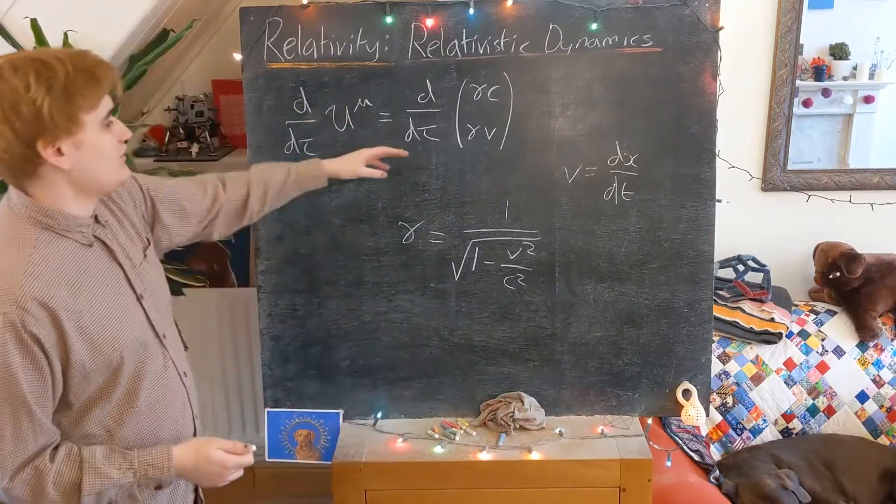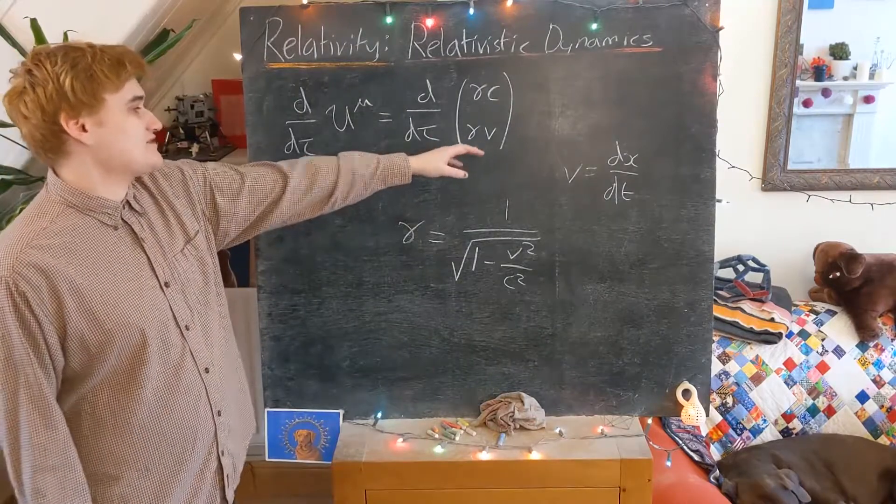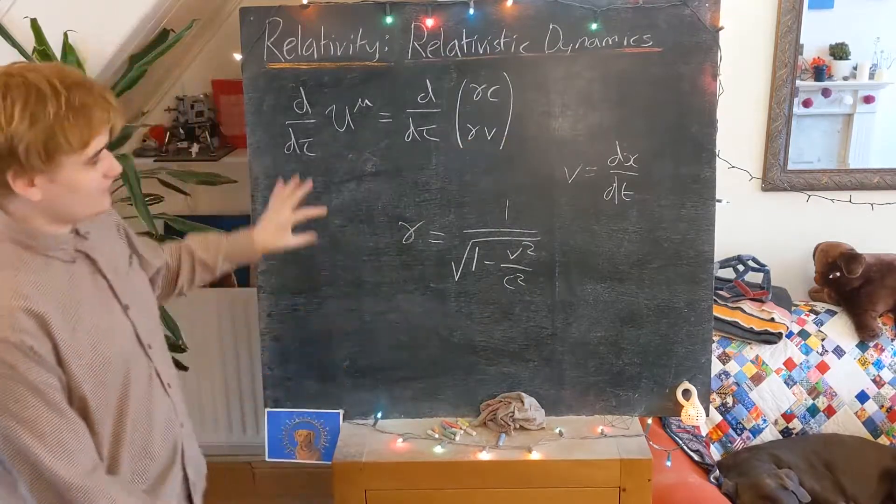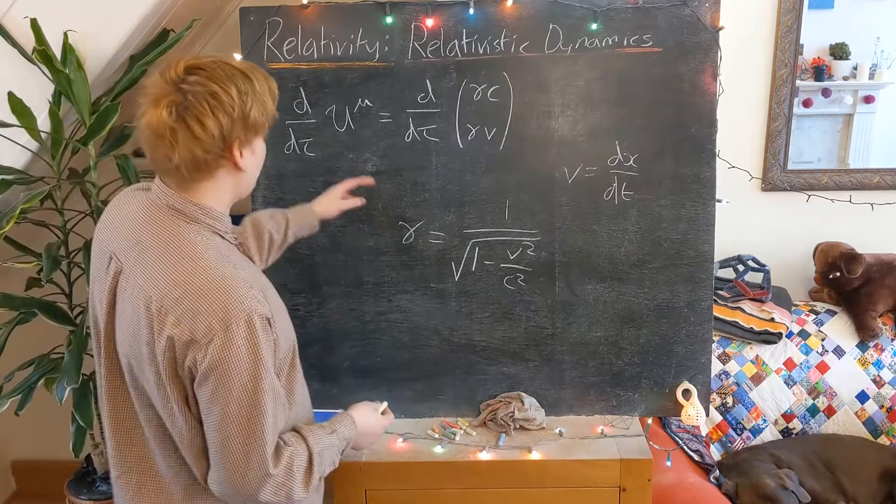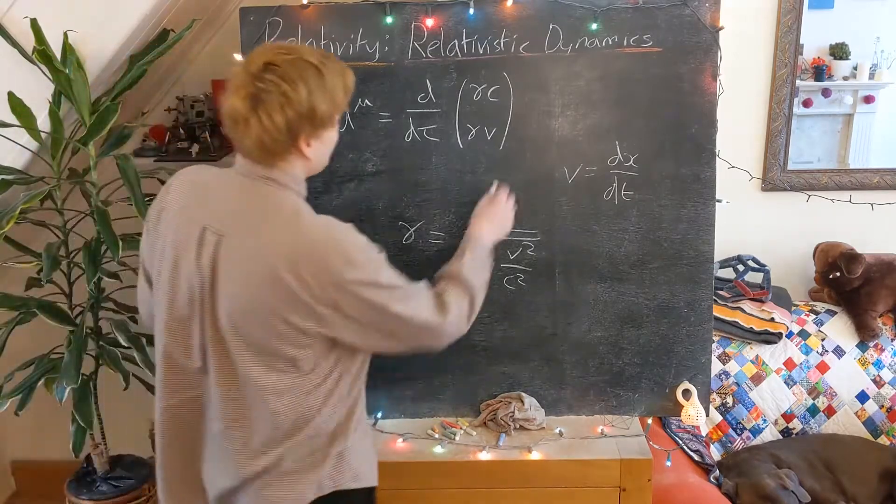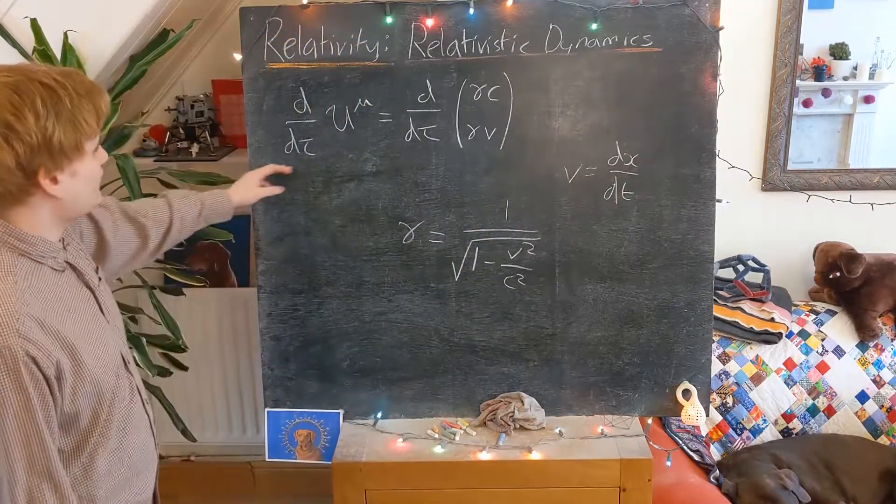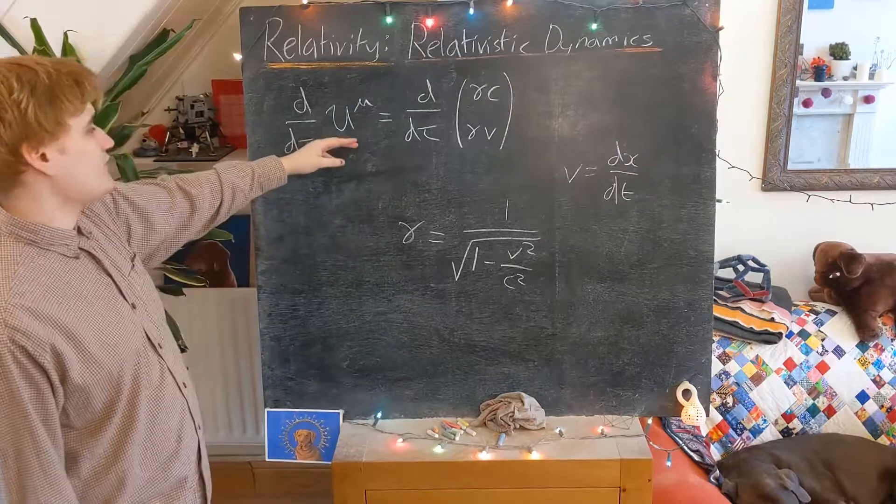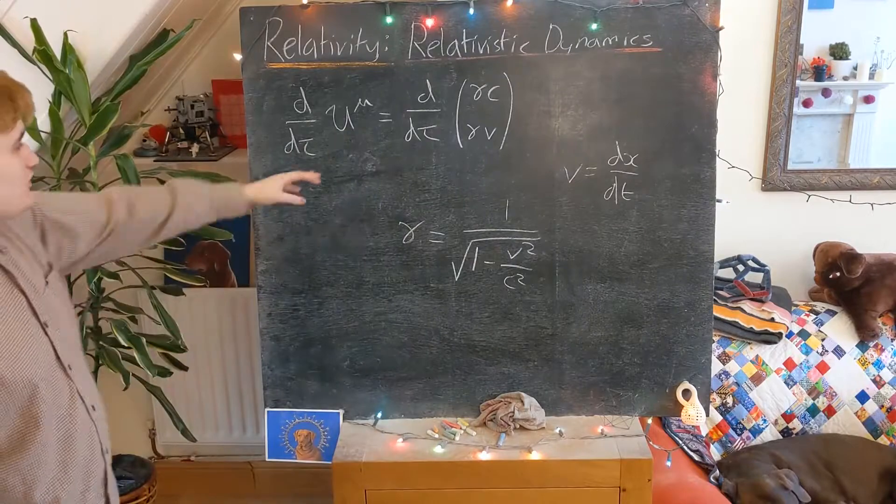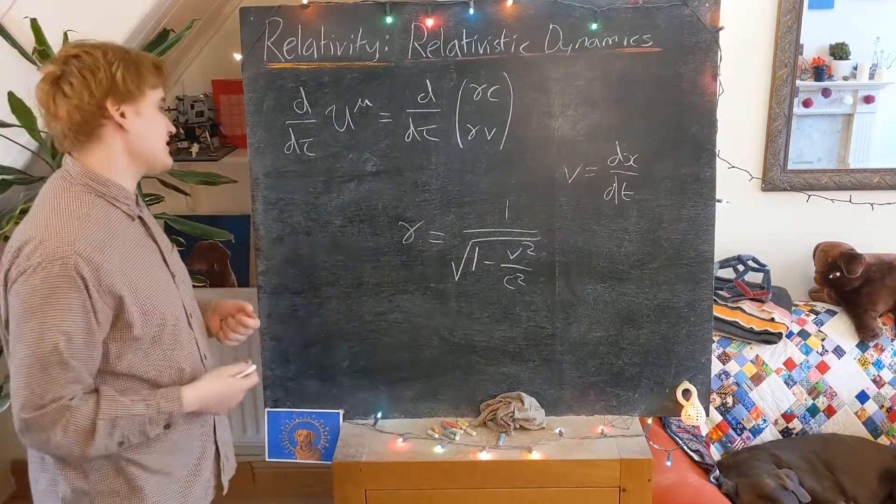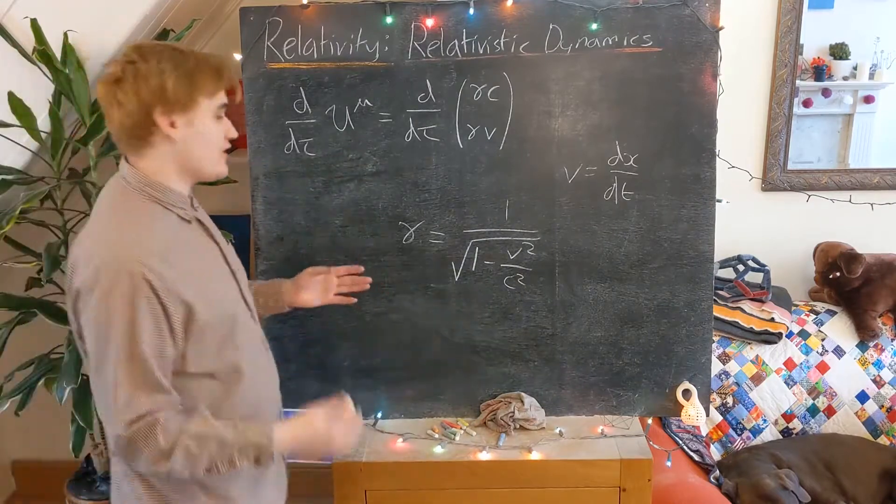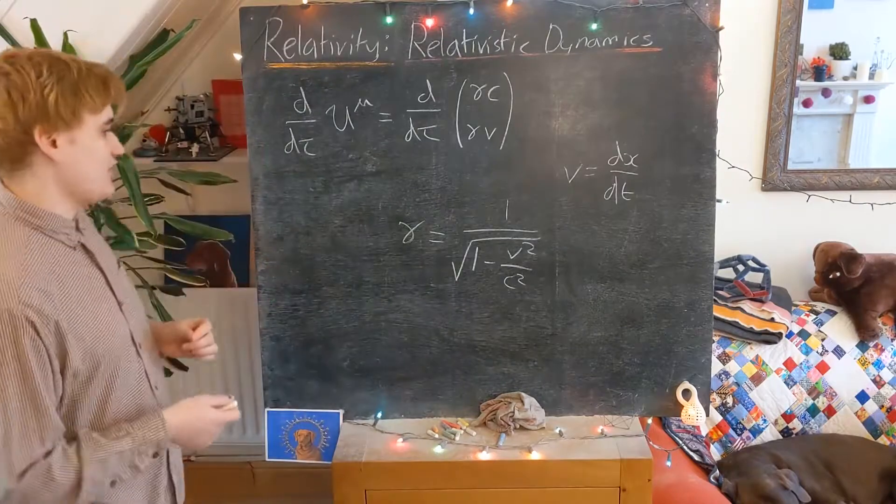And so whilst you can express these acceleration components in terms of quantities that we like, like gamma and velocity, we don't really learn too much from their form, and they're just kind of needlessly complicated. It's now just kind of better to realize that this 4-acceleration is somehow the derivative of our 4-velocity, and if our 4-velocity is somehow not constant, i.e. we're not in an inertial moving reference frame, the 4-acceleration is then going to become non-zero, and we're talking about a non-inertial reference frame.